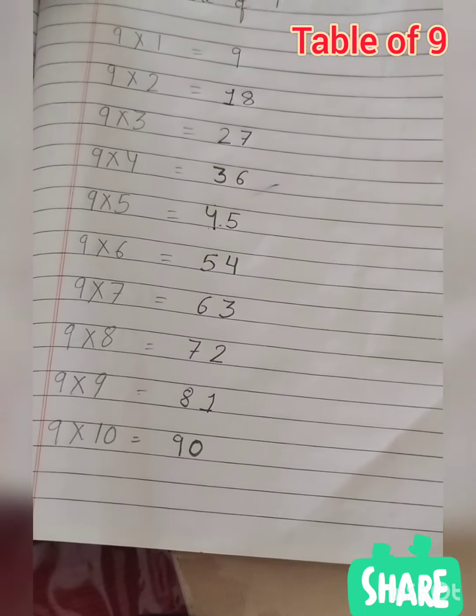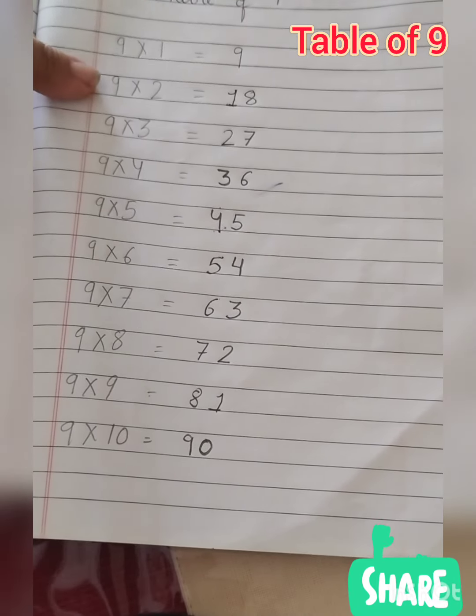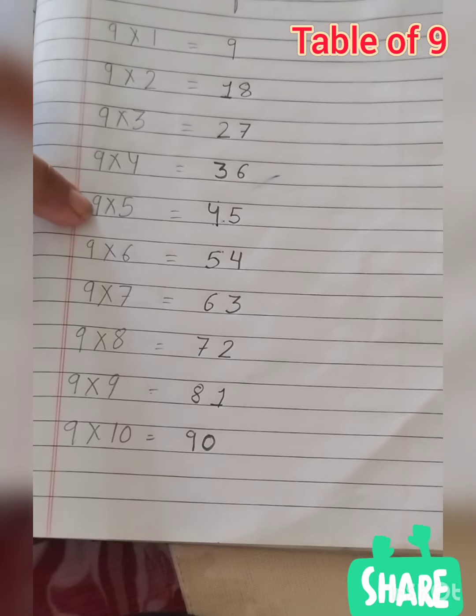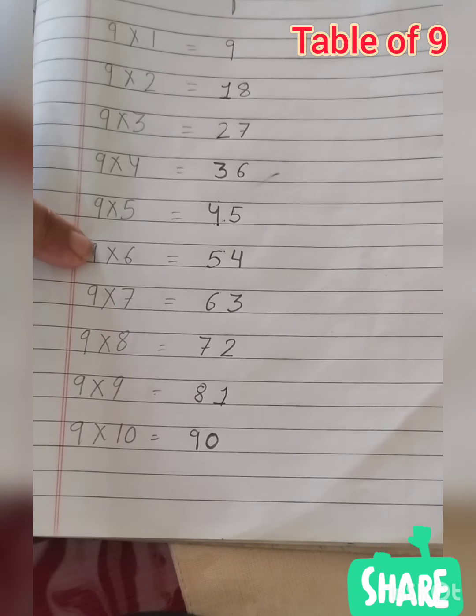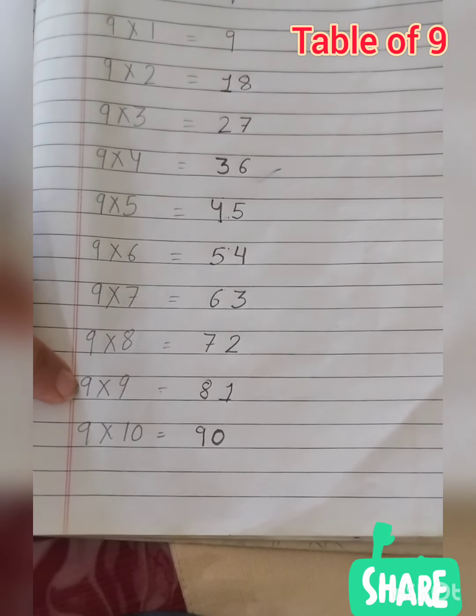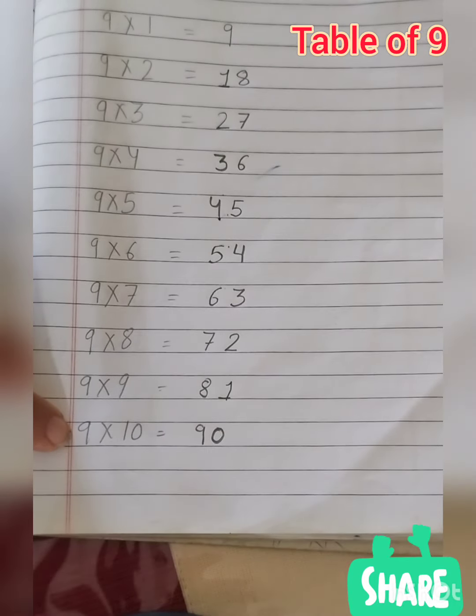So 9 times 1 is 9, 9 times 2 is 18, 9 times 3 is 27, 9 times 4 is 36, 9 times 5 is 45, 9 times 6 is 54, 9 times 7 is 63, 9 times 8 is 72, 9 times 9 is 81, 9 times 10 is 90.